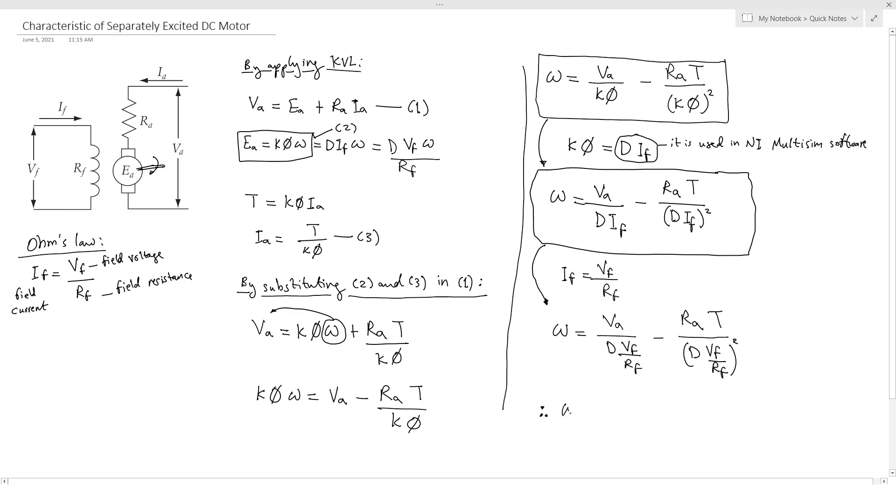So omega will equal, this RF will go up and also this RF squared will go up. So here we will have RF VA over D VF minus RA RF squared T over D VF squared.